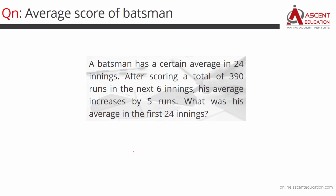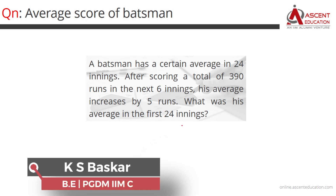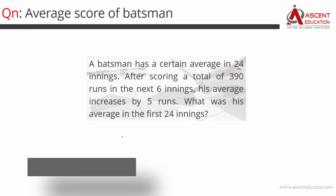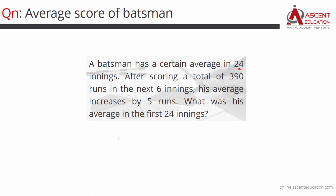Straightforward question. A batsman has a certain average in 24 innings. After scoring a total of 390 runs in the next 6 innings, his average increases by 5 runs. What was his average in the first 24 innings?